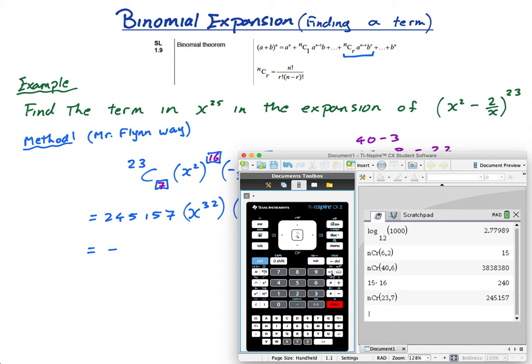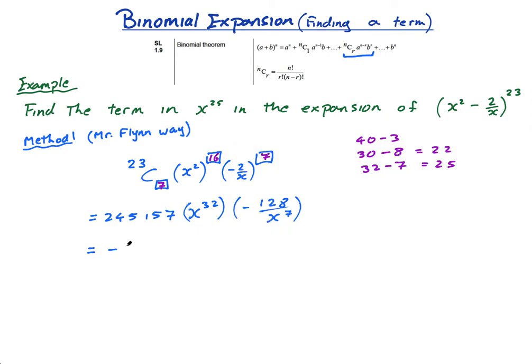This equals negative, I need to multiply that by 128. I'm going to do multiply by 128. So I have -31,380,096. That is the coefficient. And then it's x^32 over x^7, which is going to give me x^25. That is the term in x^25. That is the term. I didn't ask you to expand this whole thing out, because if you did, that would just have been one of the terms.